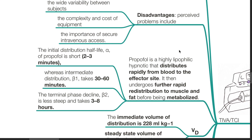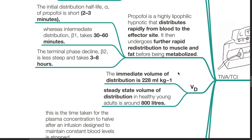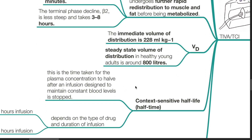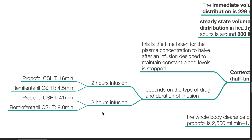Propofol is a highly lipophilic hypnotic that distributes rapidly from the blood to the effector site, then undergoes rapid redistribution to muscle and fat before being metabolized. The half-life alpha is 2 to 3 minutes, beta-1 is 30 to 60 minutes, and beta-2 is 3 to 8 hours. The immediate volume of distribution is 228 mL per kg, and the steady-state volume of distribution in a healthy young adult is around 800 liters. The context-sensitive half-time is the time for plasma concentration to halve after stopping an infusion designed to maintain a constant blood level. For example, a 2-hour propofol infusion results in a context-sensitive half-time of 16 minutes compared to 4.5 minutes for remifentanil, and an 8-hour infusion results in 41 minutes for propofol versus 9 minutes for remifentanil.